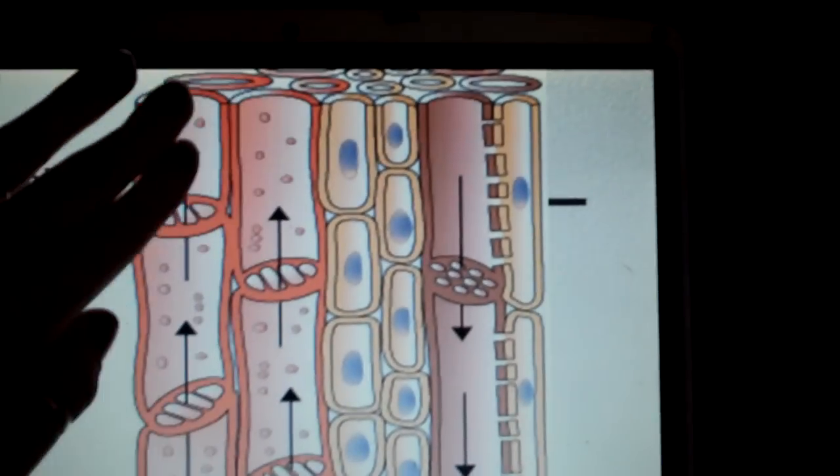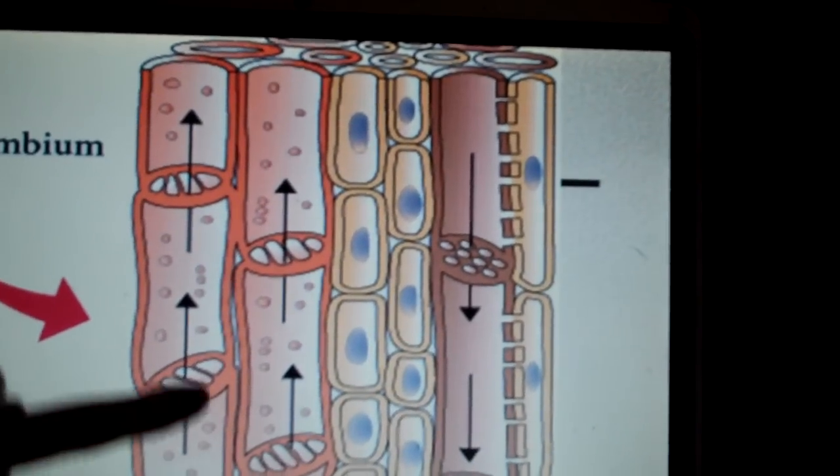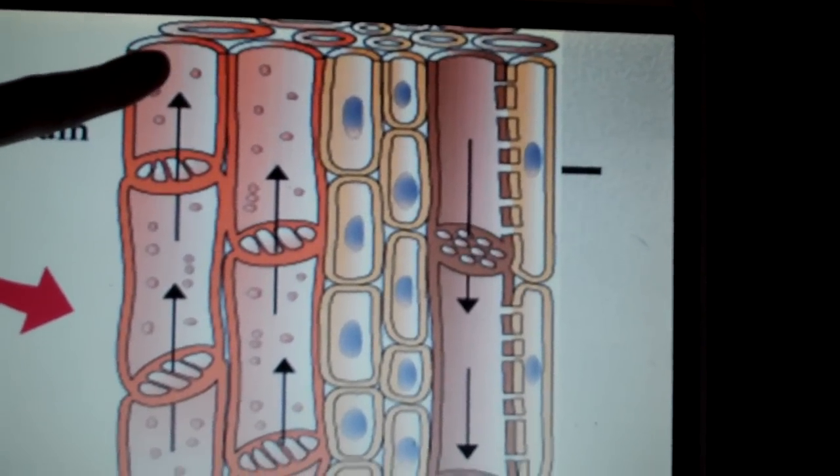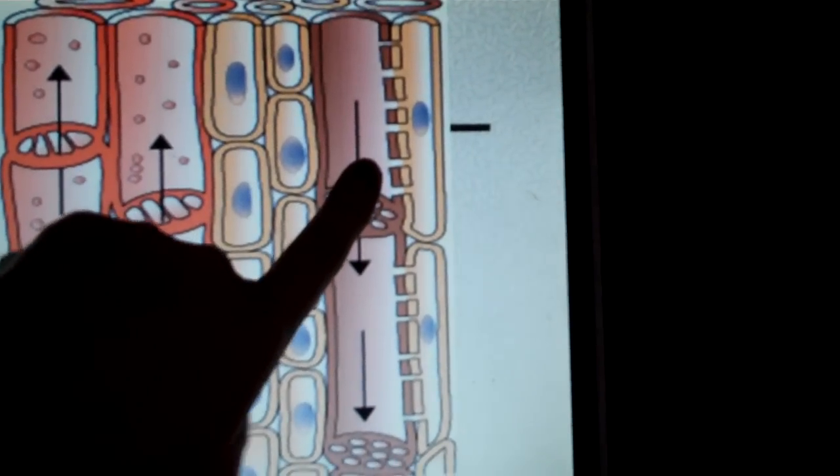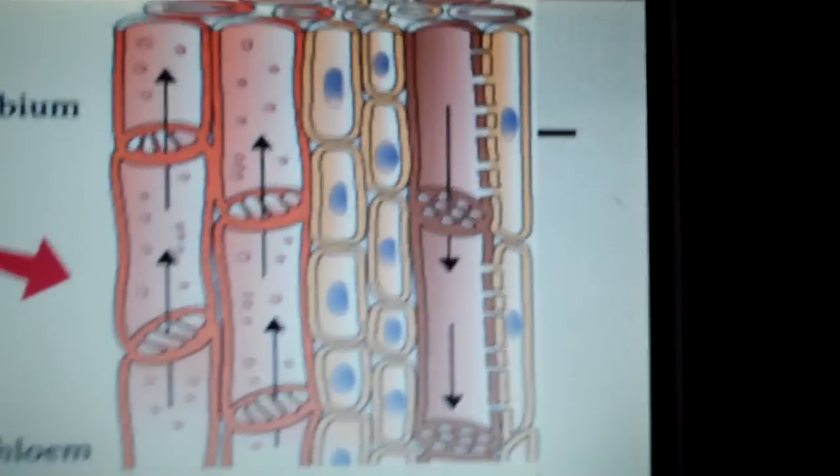You can see here, again, the vascular cambium is going to move water in one direction from the roots to the tips of the plants. Here's the vascular cambium, and then we have the phloem, which can move the sap in either direction.